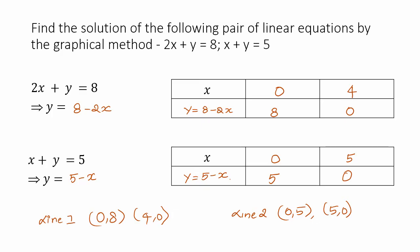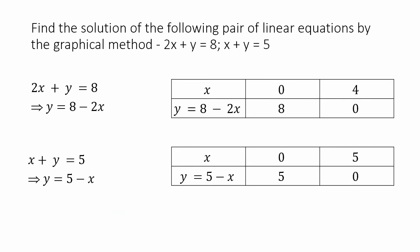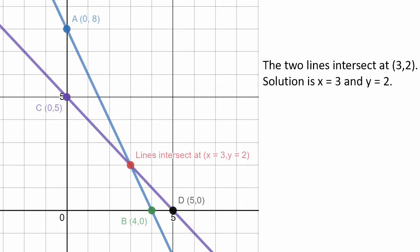Let us plot it. So the first line is 0 and 8, and 4 and 0. We plot these points. This line is 2x plus y equals 8. So that is the first line.